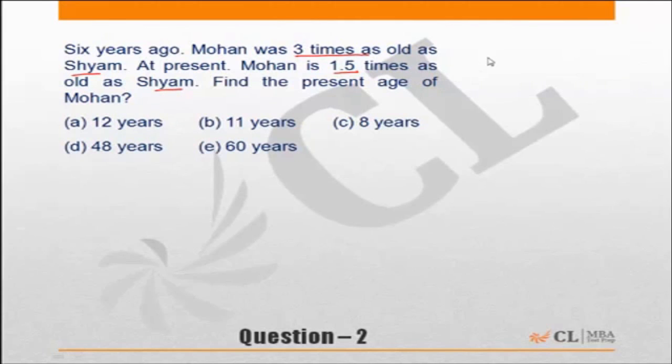Now let us assume that the current ages of Mohan and Shyam are M and S respectively. The question says six years ago Mohan was three times as old as Shyam. So six years ago Mohan's age was M minus six and Shyam's age was S minus six. Mohan was three times as old as Shyam, so this into three. This was the situation six years ago.